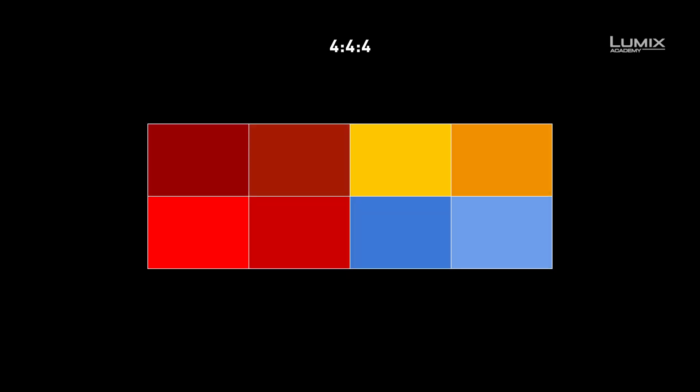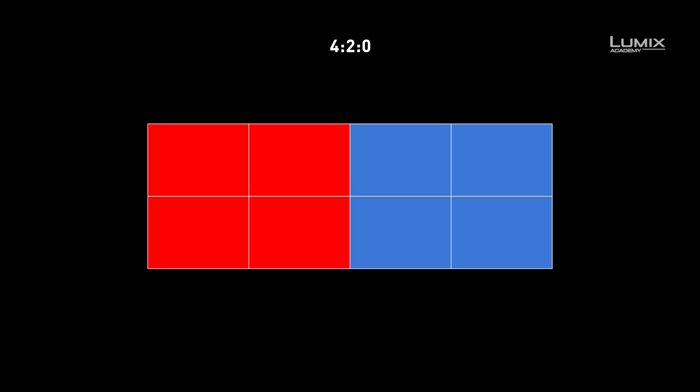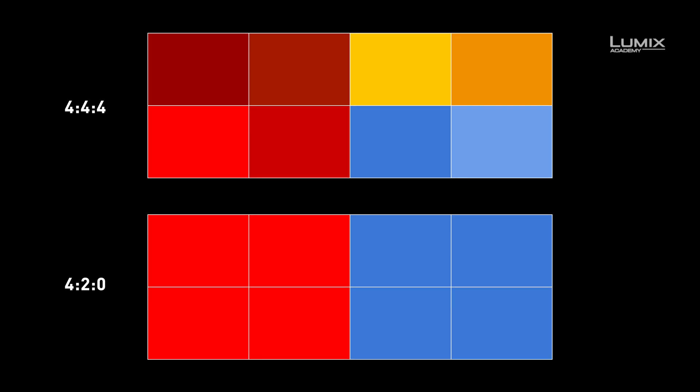The second number refers to the number of pixels in the first row that will have their own chroma sample. The third refers to the number of pixels in row 2 that will have their own chroma sample. So in 4:4:4, each pixel has its own chroma sample. In 4:2:2, every other pixel has its own chroma sample. And lastly, in 4:2:0, the bottom pixels are duplicated in the second row, which means every 2-by-2 square of pixels has the same chroma value.